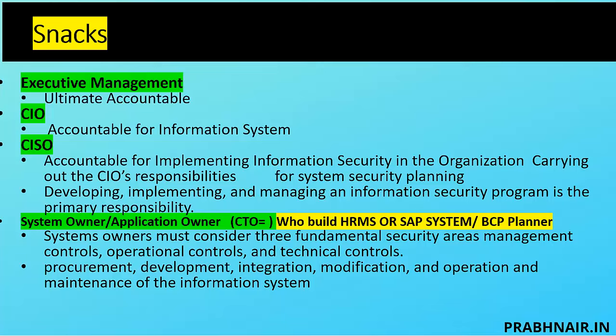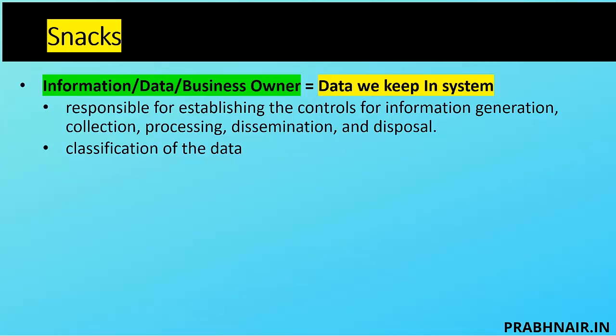Information owner, data owner, and business owner are all the same — don't get confused. They are responsible for establishing controls for information generation, collection, processing, dissemination, and disposal. They are ultimately accountable for data classification because they are the subject matter experts. For example, the sales team coordinating with business knows what regulations apply in a particular country and what category the data should have. The data owner is responsible for classifying the data and ensuring the data receives the appropriate level of security throughout its lifecycle. They coordinate with security professionals to ensure necessary controls are applied.